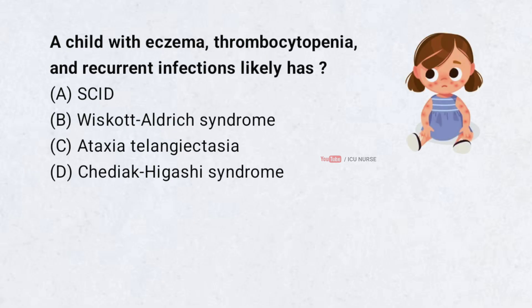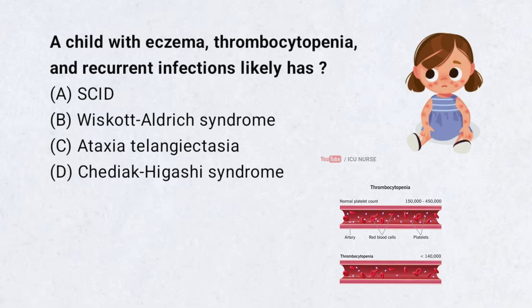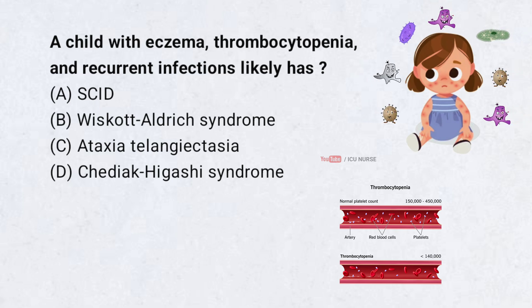A child with eczema, thrombocytopenia, and recurrent infections likely has: A. SCID. B. Wiskott-Aldrich syndrome. C. Ataxia telangiectasia. D. Chediak-Higashi syndrome. Correct answer: B. Wiskott-Aldrich syndrome.